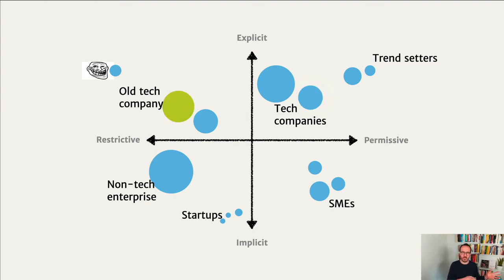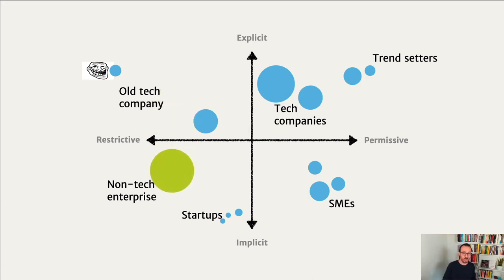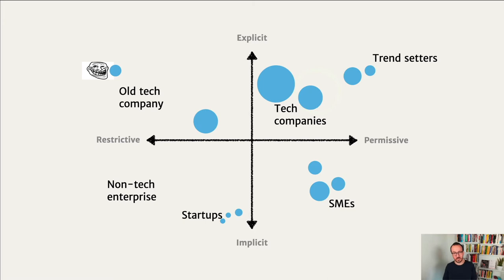Moving to old tech companies, we've seen many of these over the last decade. The canonical example is Microsoft, which moved from being extremely restrictive to being increasingly permissive about open source. For non-tech large organizations, as they digitally transform, they tend to want to be more explicit about their practices — but unfortunately they don't become more permissive as a result. Again, what we'd like to see is a move to being more explicit and at the same time more permissive, so that engineers can really participate in the broader open-source ecosystem.